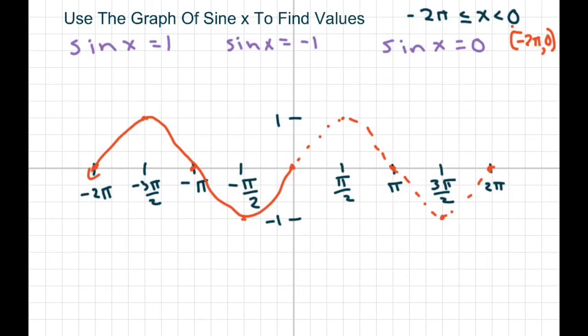Where sine equals 1 is right here, so that would be x equals negative 3π/2. And at negative 1, that would be x equals negative π/2.